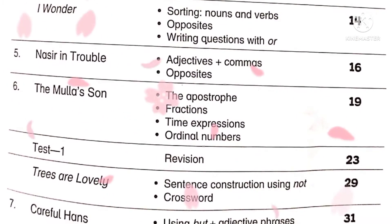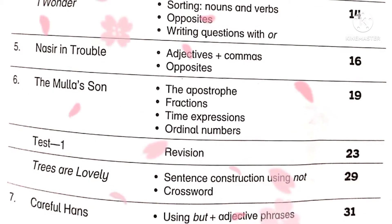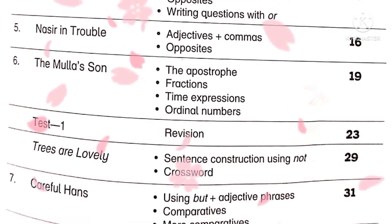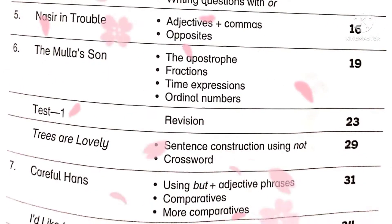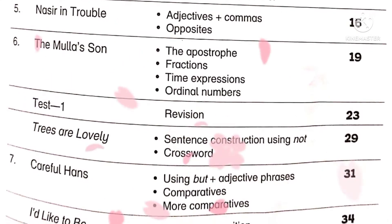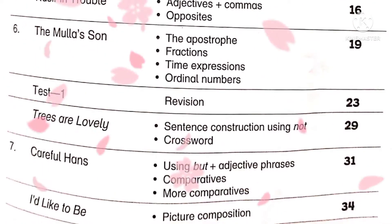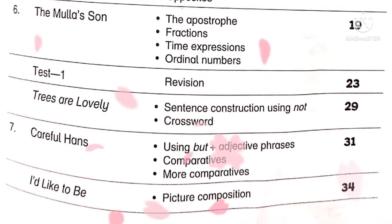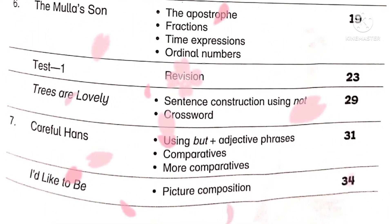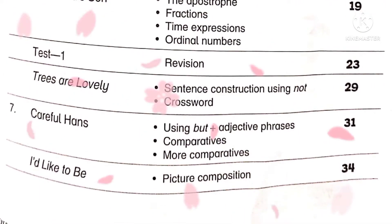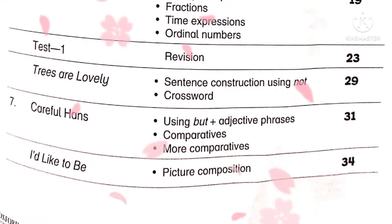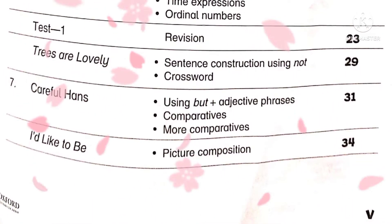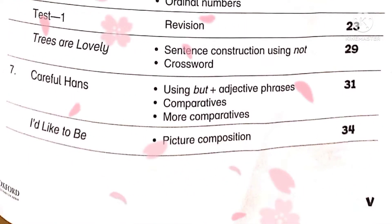Next is unit number five, 'Nasser in Trouble.' We will learn adjectives, commas, and opposites. Next is unit number six, 'My Name is Mullah San.' The concepts we will discuss are the apostrophe, fractions, time expressions, and ordinal numbers. After this is a testament, which is a revision section.